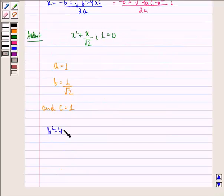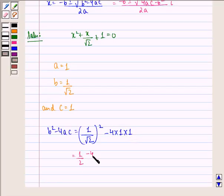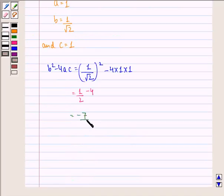Now we can easily find out the value of b square minus 4ac. That is equal to 1 by root 2 the whole square minus 4 into 1 into 1. This is equal to 1 by 2 minus 4, and this is equal to minus 7 by 2.